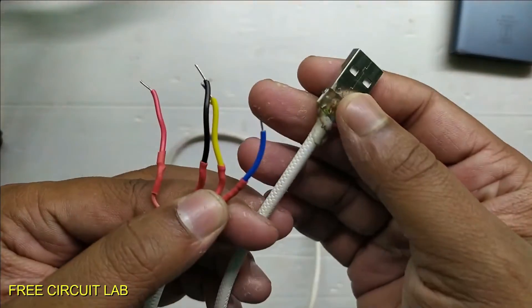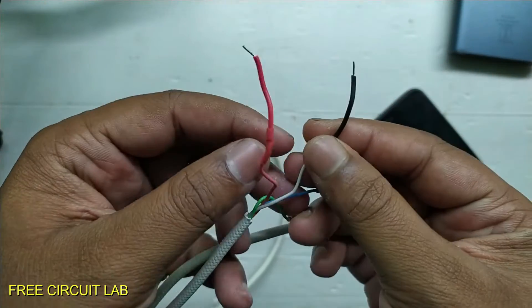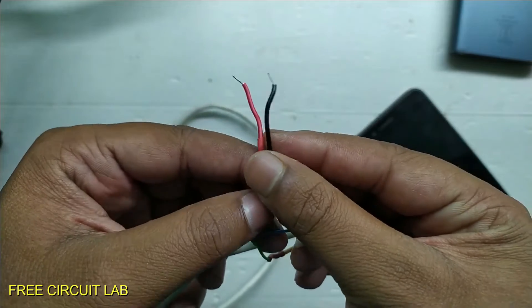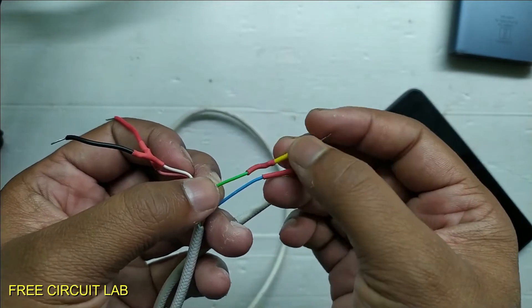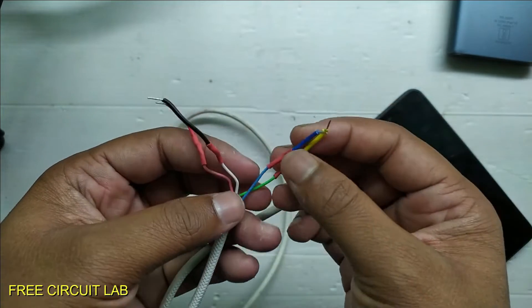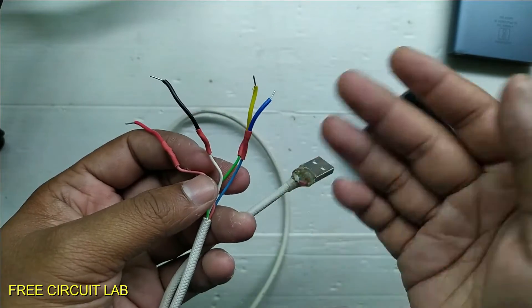If we look closer at a USB cable we find 4 wires here. 2 of them are for power and other 2 are for data connection. These are used for communication during charging. The phone tells the charger to raise or lower the voltage depending on the requirements.